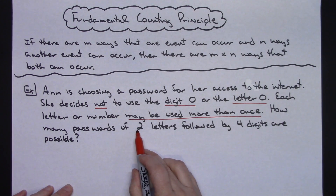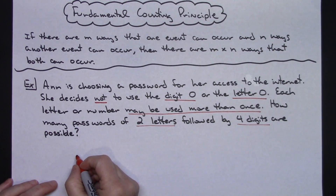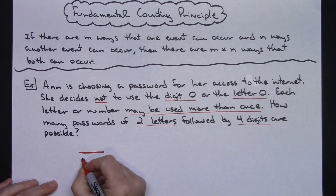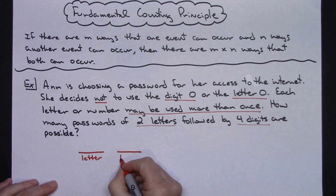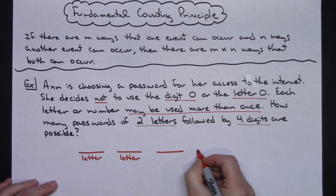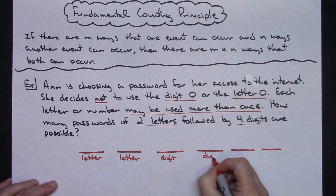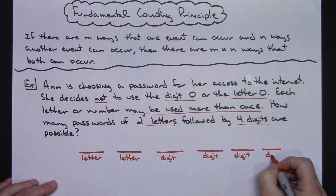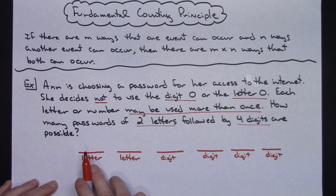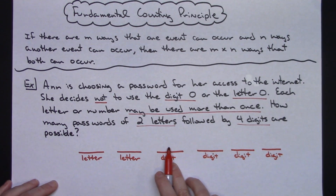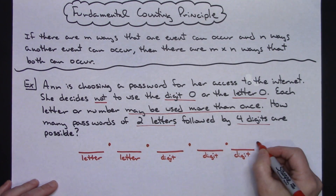Our overall password has two letters and four digits. What I like to do first is set that up showing exactly how many letters and how many digits we're going to have. So I'm going to have two letter slots and then four digit slots. The fundamental counting principle says we're going to multiply, so we'll figure out how many possibilities we have for the first letter, the second letter, and then each of the four digits, and multiply them all together.